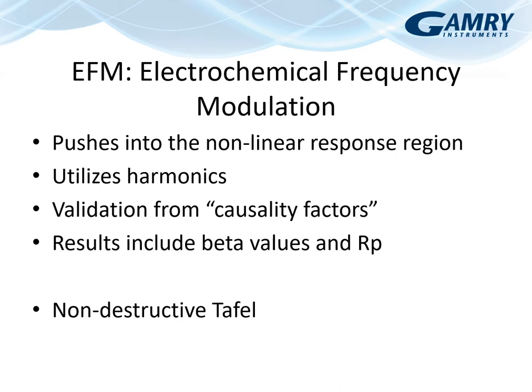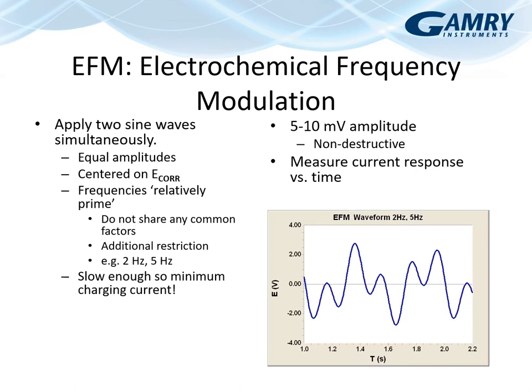Electrochemical frequency modulation provides validation through causality factors, and the data returns both beta values from Butler-Volmer and an R_p polarization resistance value or I_corr. If you're familiar with DC techniques, this is effectively a non-destructive Tafel technique. Two sine waves are applied on top of each other, deliberately pushing into the nonlinear region and generating additional harmonics that allow for collection of useful information. This is not actually EIS, so this is all we'll mention here.